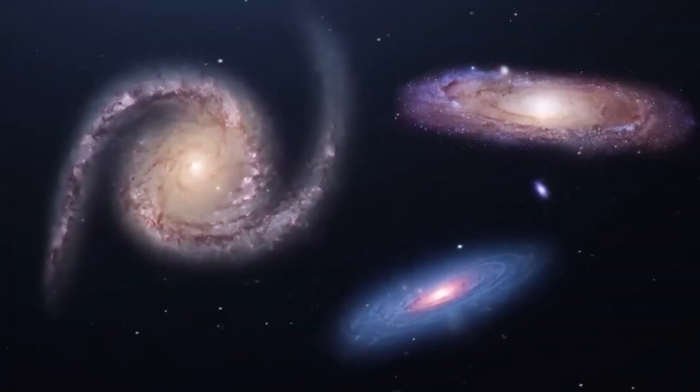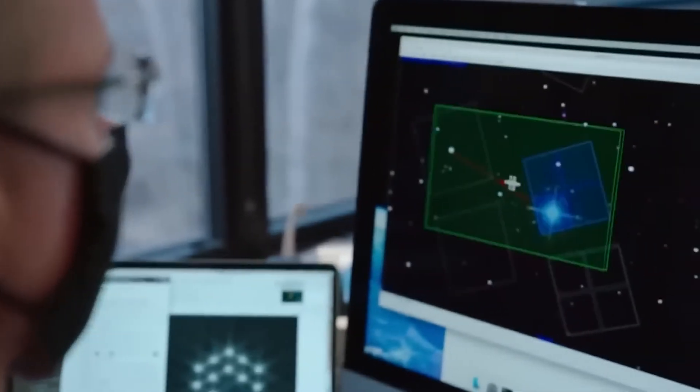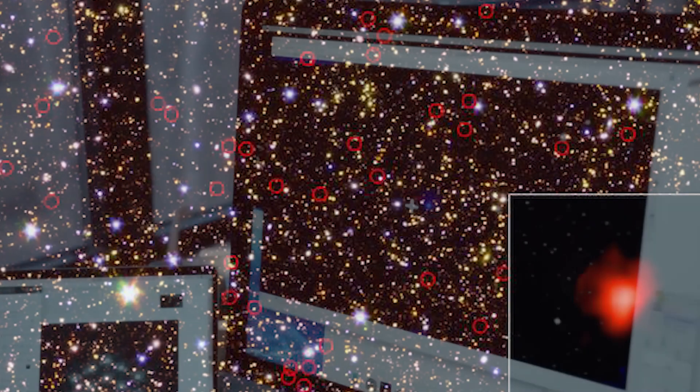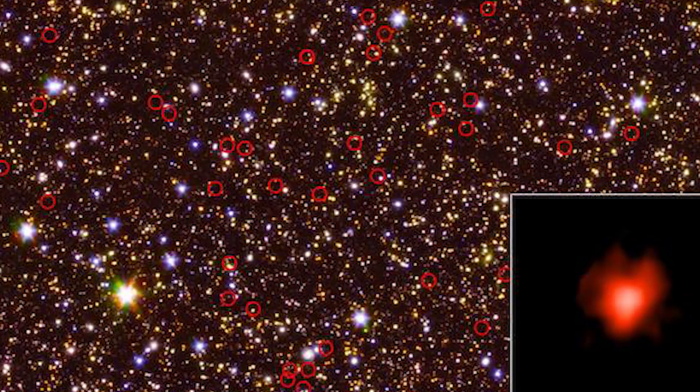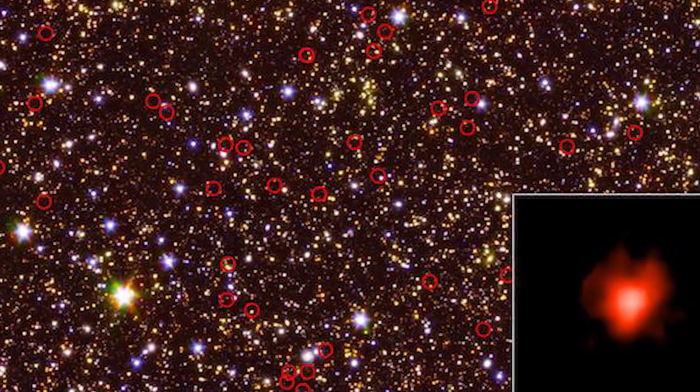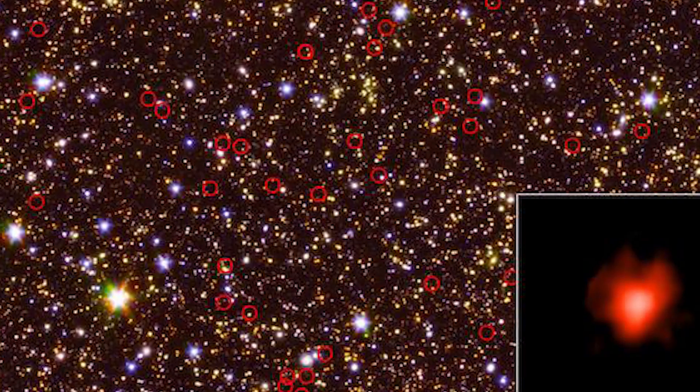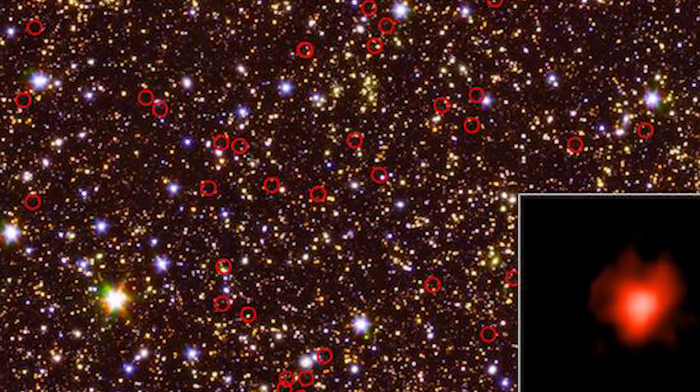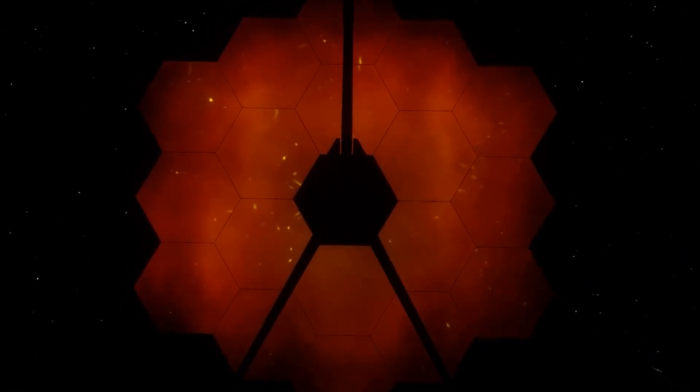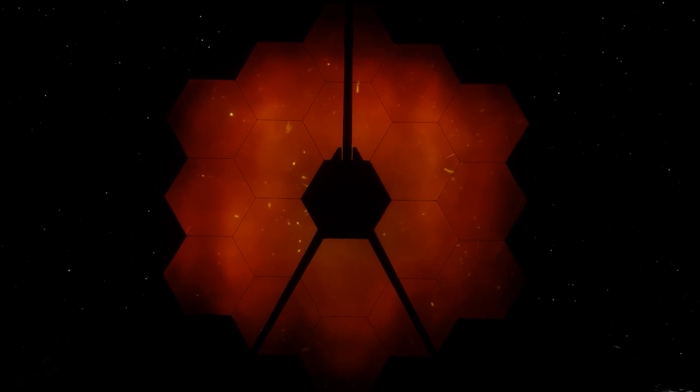Another stunning discovery stumped scientists when researchers found primordial galaxies at the edge of the universe. They were skeptical about their authenticity. Some thought they might be nearby galaxies in disguise, so they shared the data with other scientists around the world hoping for the best. Amazingly, the James Webb Space Telescope confirmed that these ancient galaxies are real.